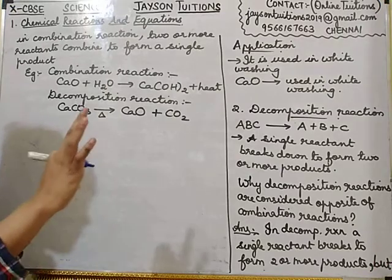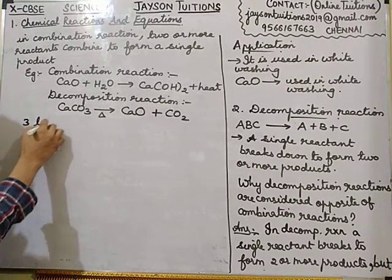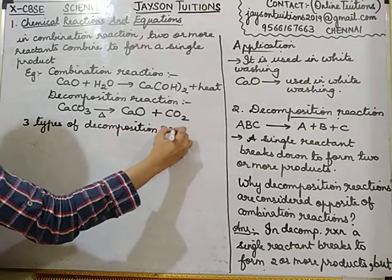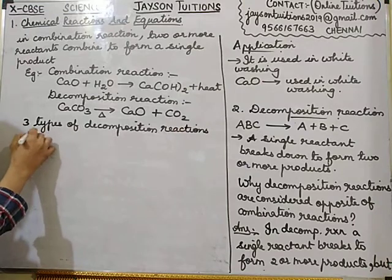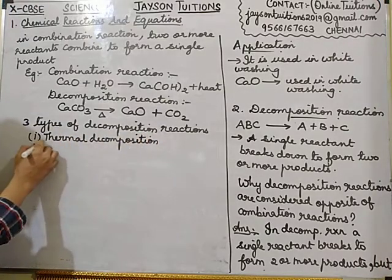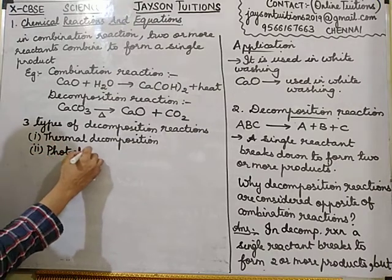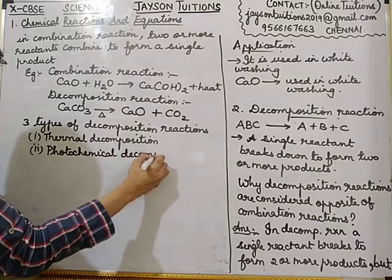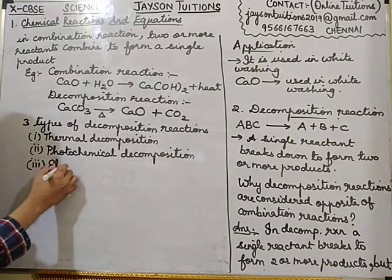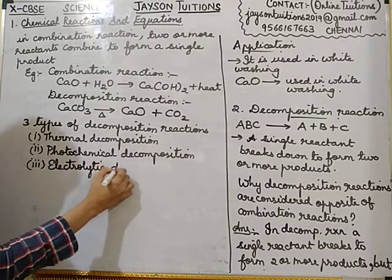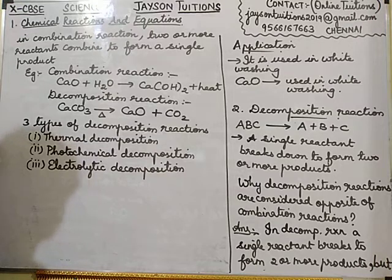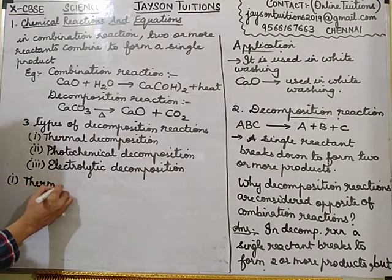Decomposition reactions can be divided into three types. The first one is called thermal decomposition. The second one is called photochemical decomposition, or photolytic decomposition. And the third one is called electrolytic decomposition.